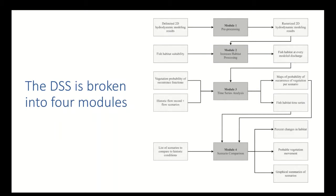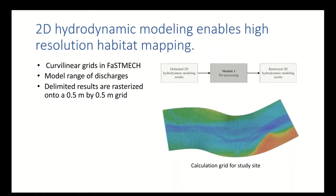The DSS is broken into four modules: the first was processing, followed by in-stream habitat processing, a time series analysis, and then scenario comparison. I'll be talking about each one of these modules throughout my presentation. We use 2D hydrodynamic modeling to get high-resolution habitat maps.